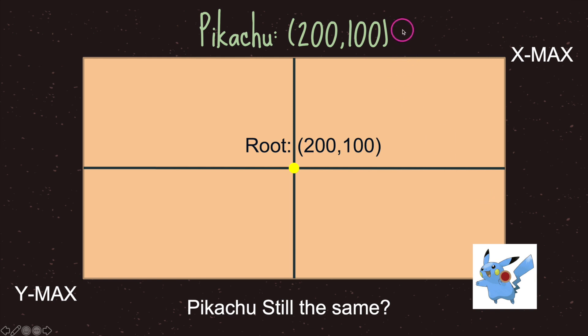But at the top here we can see that Pikachu still holds the positional value of 200 on the X axis and 100 on the Y axis. Now why exactly is that?